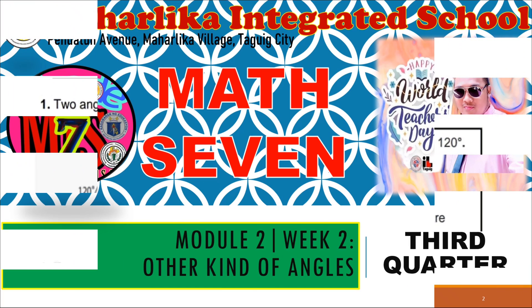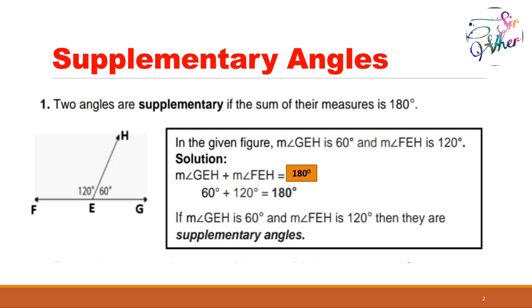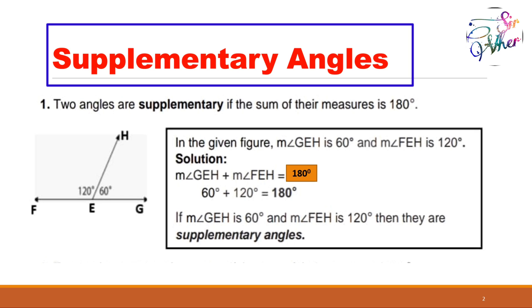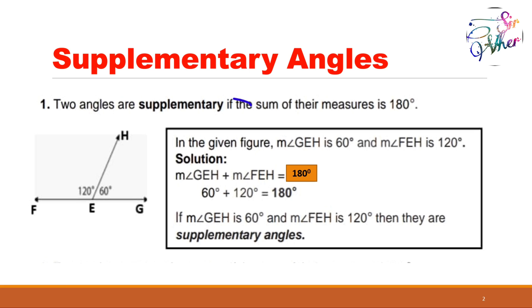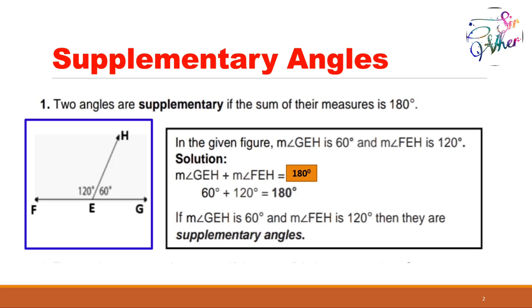Let's start with the first one: supplementary angles. Two angles are supplementary if the sum of their measures is 180 degrees. As you can see on the figure, the measure of angle GEH is 60 degrees and the measure of angle FEH is 120 degrees.